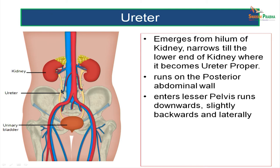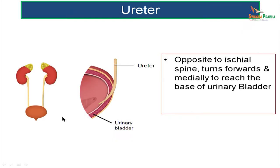Then it runs on the posterior abdominal wall, after which it is going to enter the lesser pelvis. Once it enters the lesser pelvis, it is going to run downwards, backwards, and laterally. Opposite to the ischial spine, the ureter turns forwards and medially to reach the base of the urinary bladder.